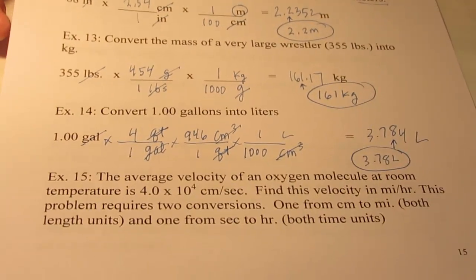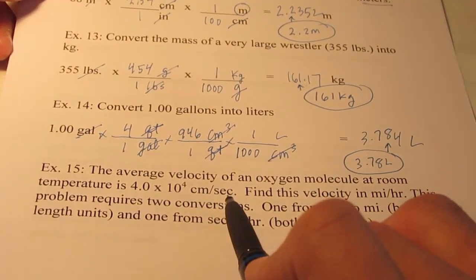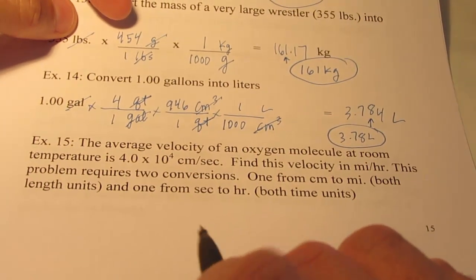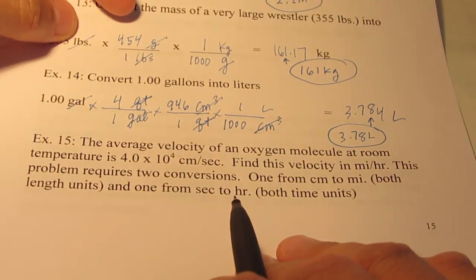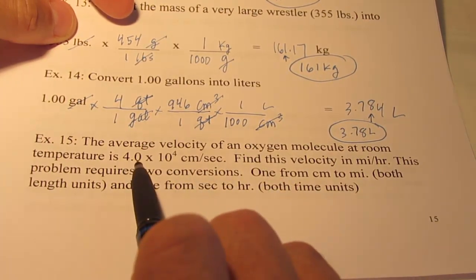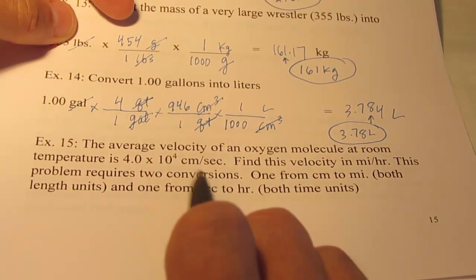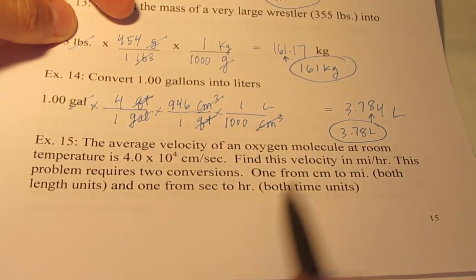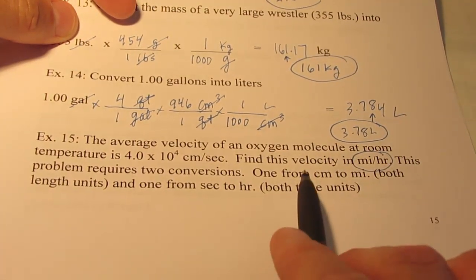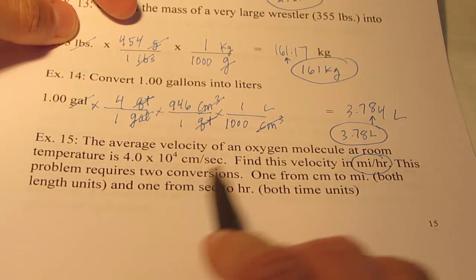Alright. Now example number 15 is a bit involved. We're going to be changing both the numerator and the denominator unit. So please, this is as hard as it gets. If you can do this one with me, you can do just about any dimensional analysis problem. So an oxygen molecule at room temperature travels at about 4.0 times 10 to the 4th centimeters per second. I don't know about you, but that doesn't mean very much to me. I'm used to velocities in miles per hour.